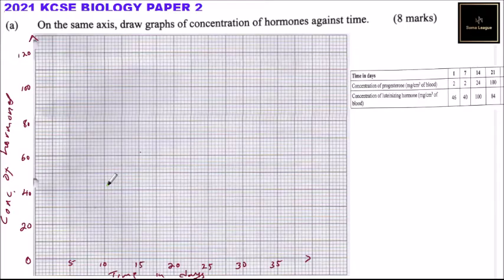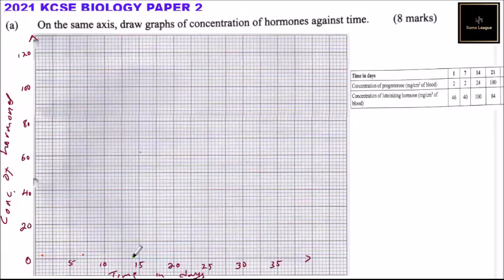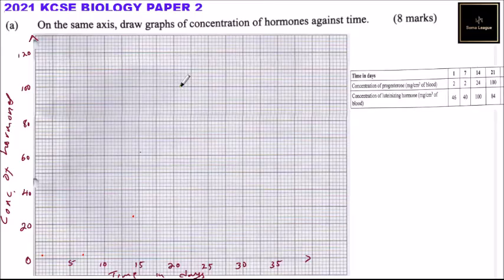Continuing to plot progesterone: at day 14 it was 24, so that point is marked at day 14. At day 21 it was 100, plotted accordingly. At day 28 it was 20, so that point is marked at day 28.